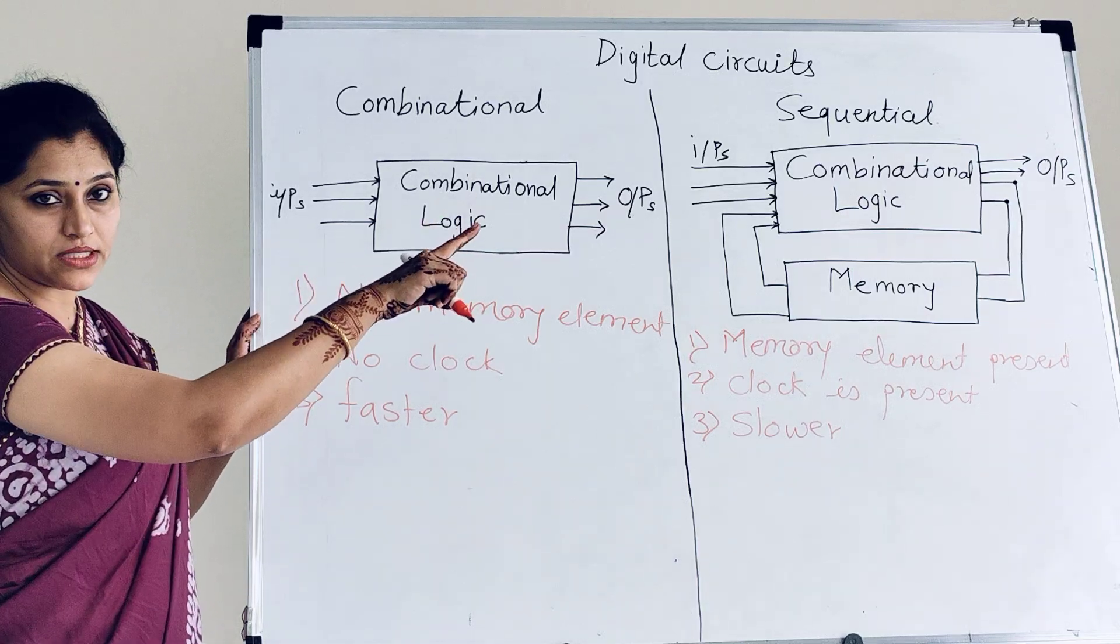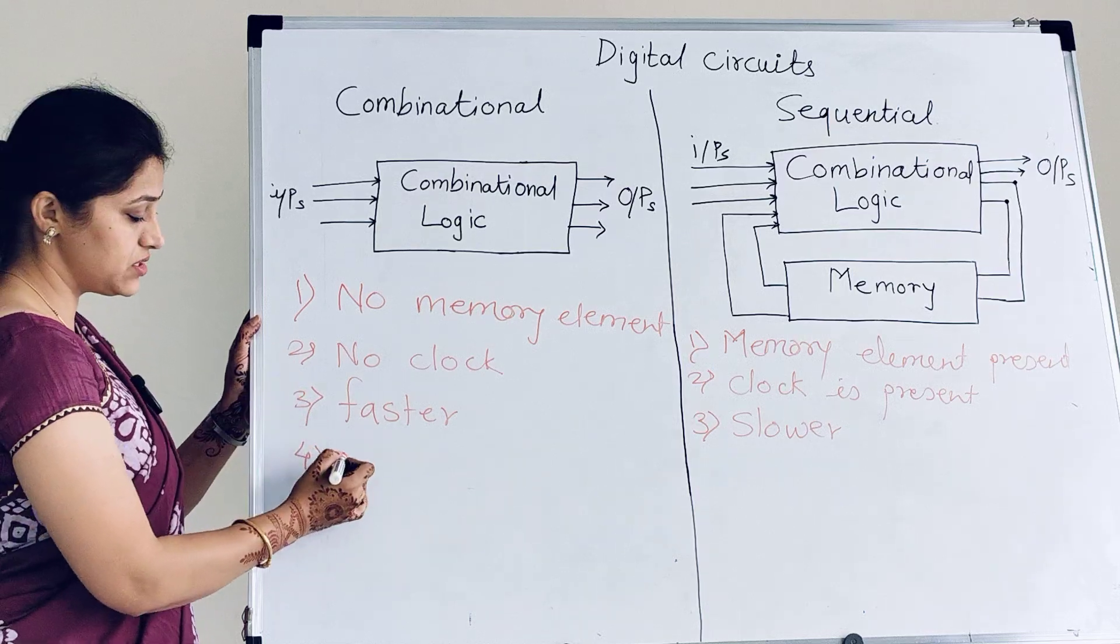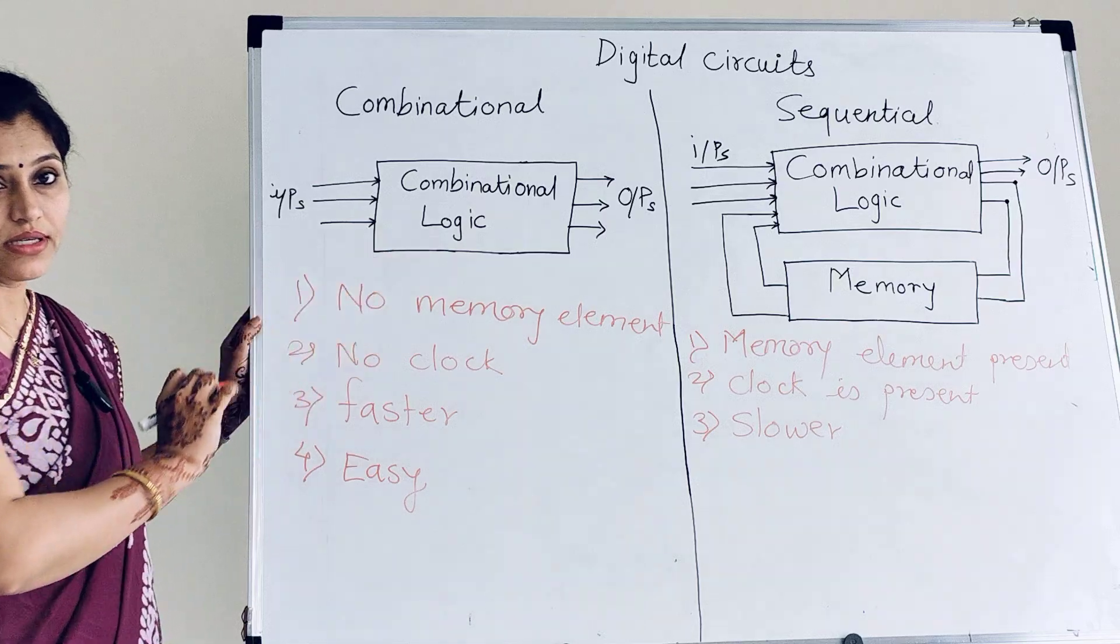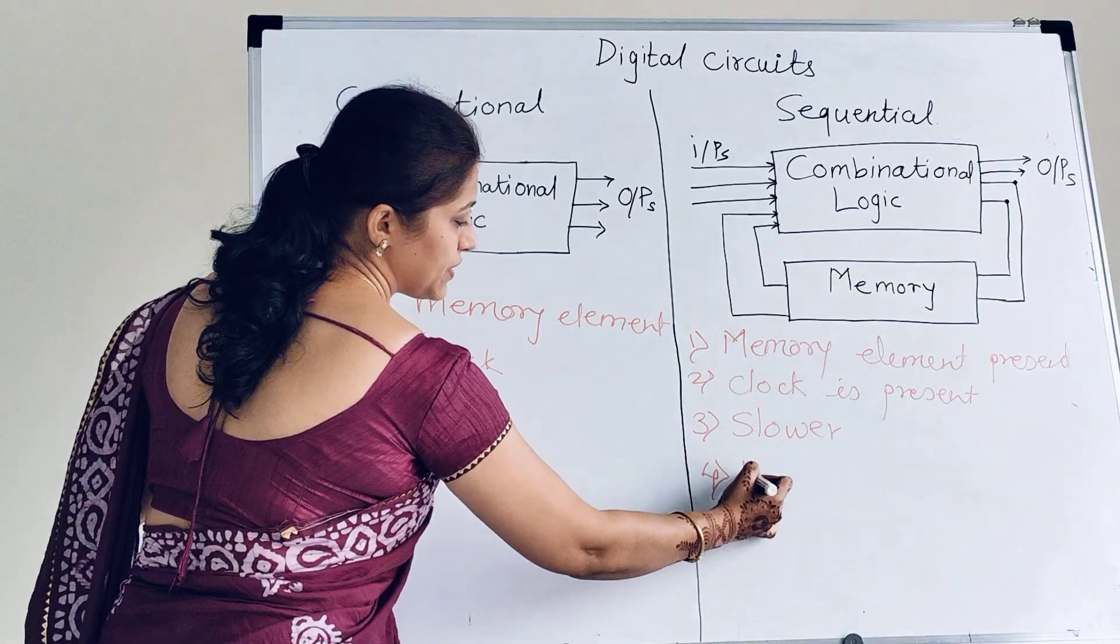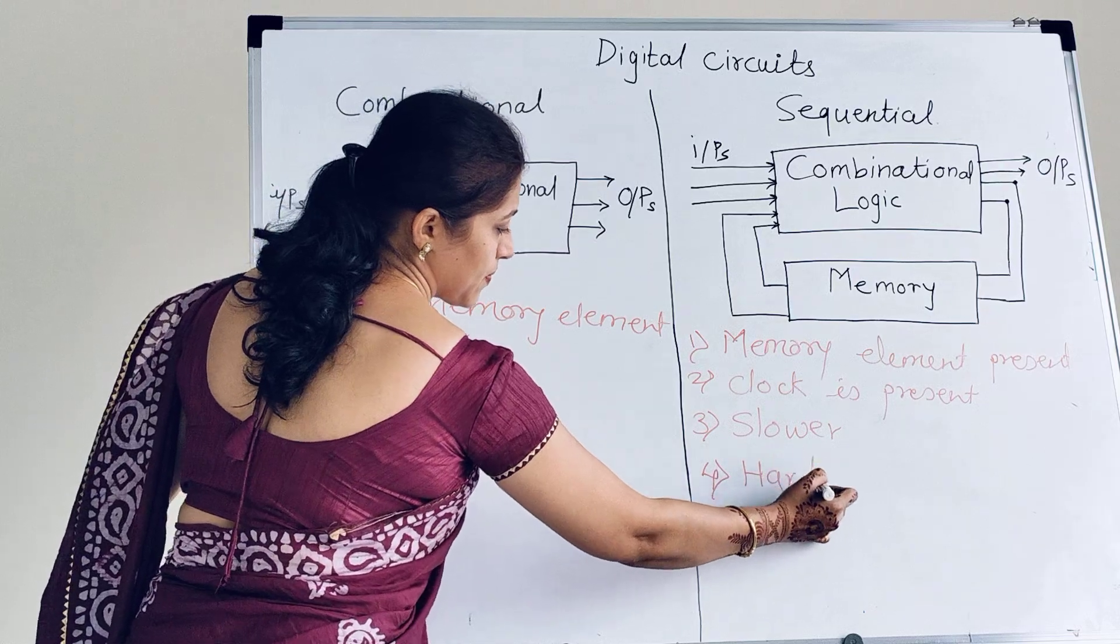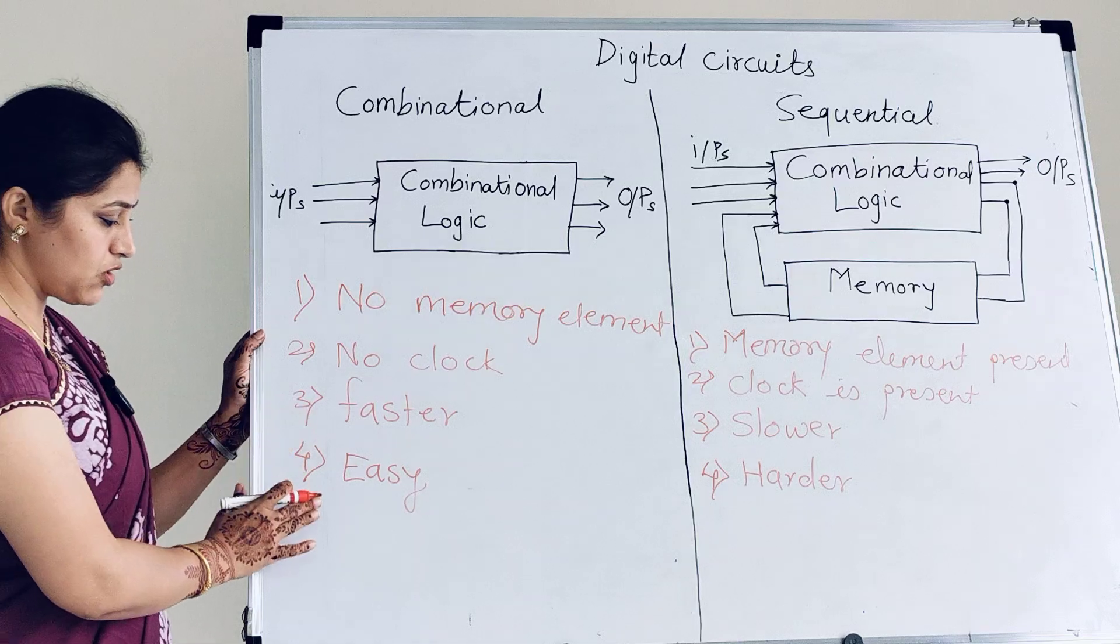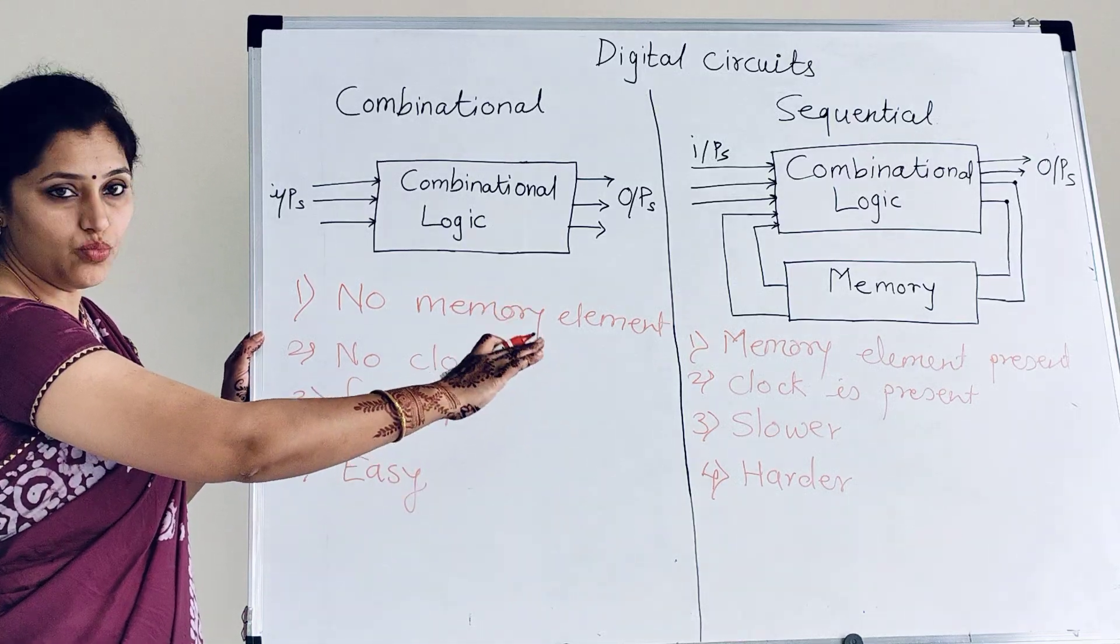Then here they are complex. So implementation of combinational circuits is easy. And here in sequential circuits, they are slightly harder to implement. Harder for implementation. Here complexity is less. Here complexity is more.